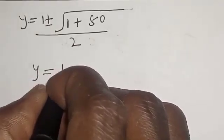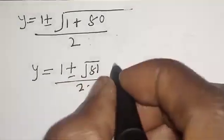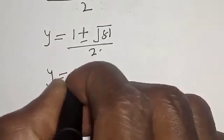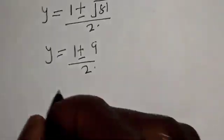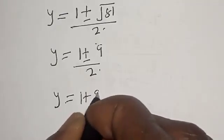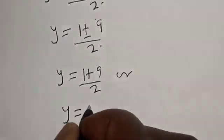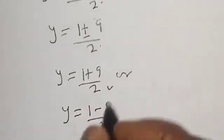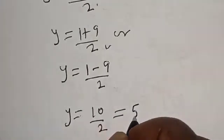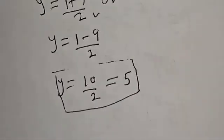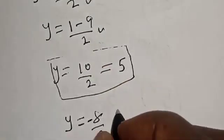So y equals 1 plus or minus square root of 81, over 2. The square root of 81 is 9. Therefore y equals 1 plus 9 over 2, or y equals 1 minus 9 over 2. From the first case, y equals 10 over 2, which equals 5.